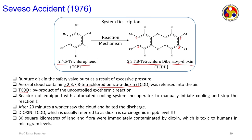TCDD was a byproduct of the uncontrolled exothermic reaction. The reactor was not equipped with an automatic cooling system, and no operator was present to manually initiate cooling. After around 20 minutes a worker saw the cloud and halted the discharge. TCDD is carcinogenic even at parts per billion levels; 30 square kilometers of land and flora were immediately contaminated. Fortunately nobody died, but many were treated for dioxin poisoning.